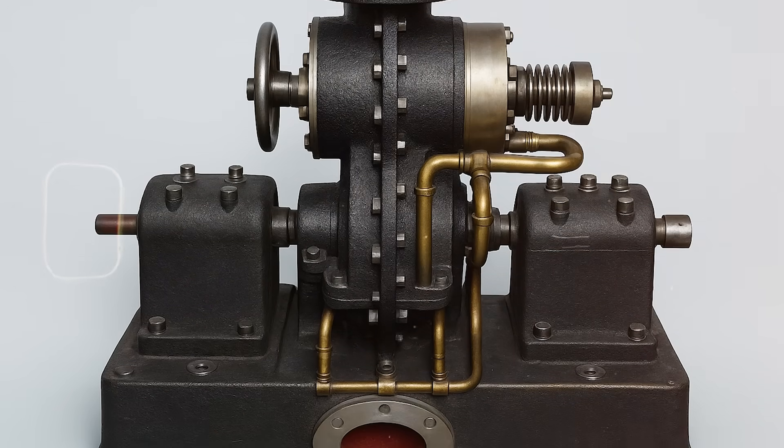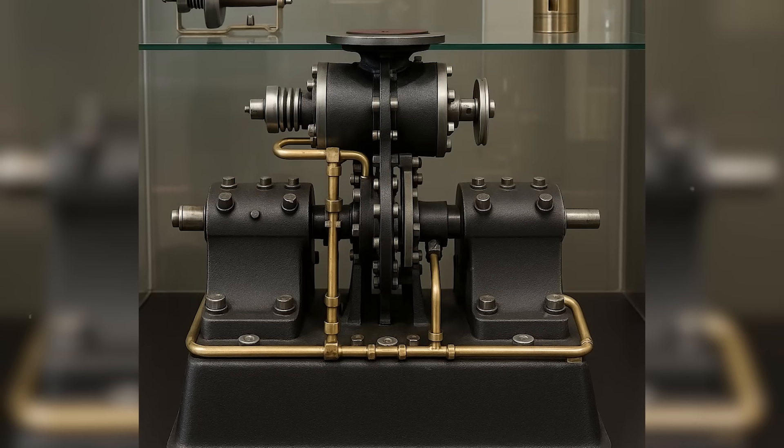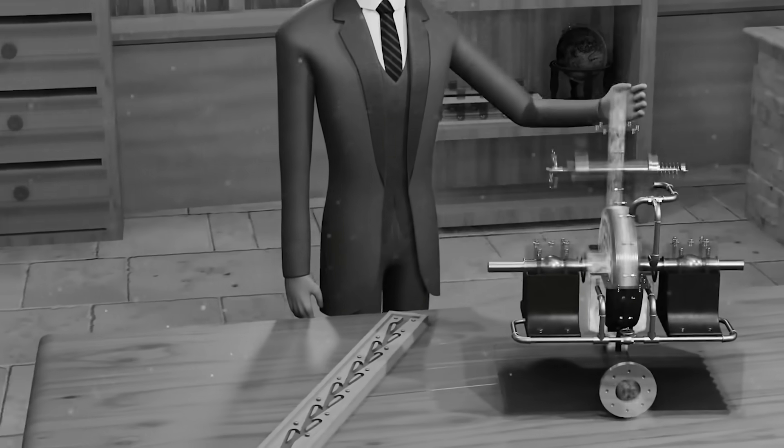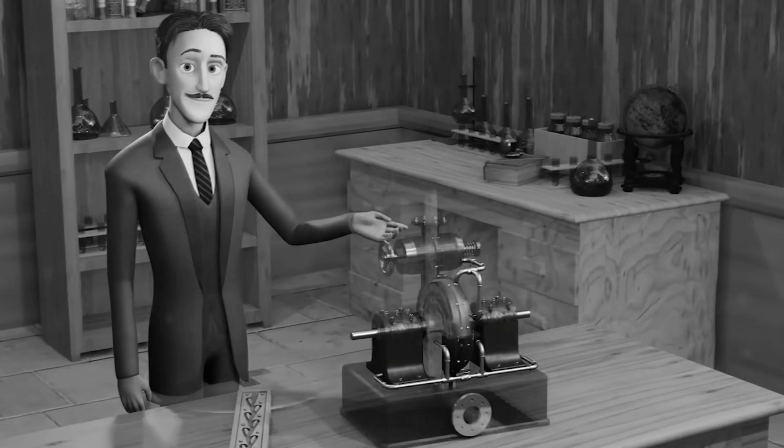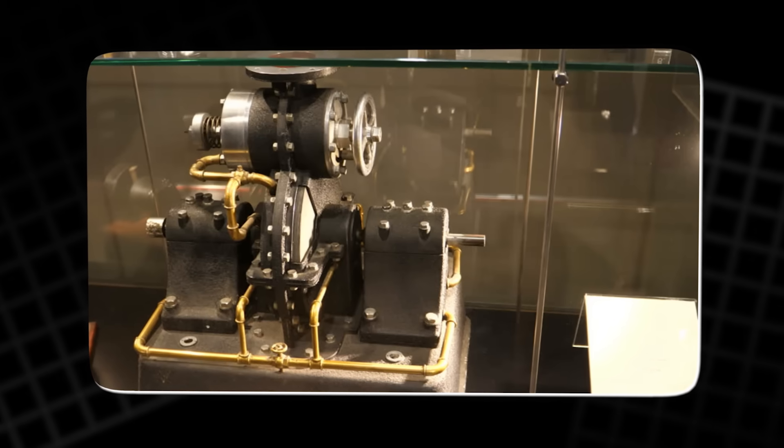Instead of using blades, vanes, or buckets, he proposed a simple stack of thin, smooth metal discs, separated by small gaps and enclosed in a casing. Steam or air would enter tangentially at the edges, spiral inward between the discs, and exit through a central exhaust.